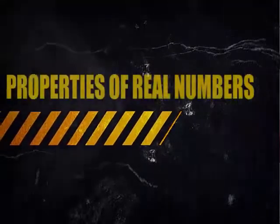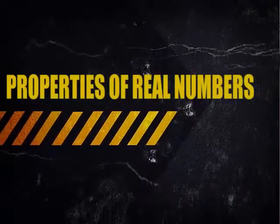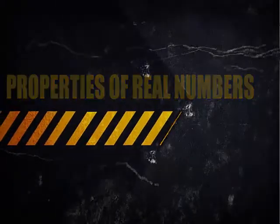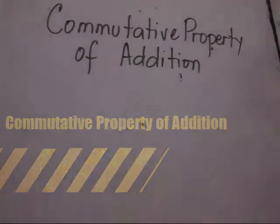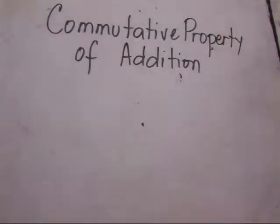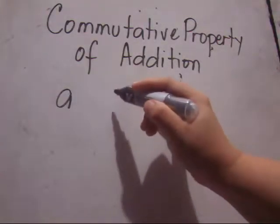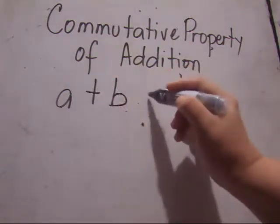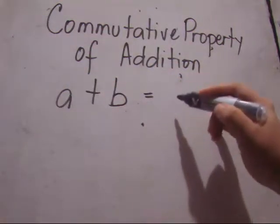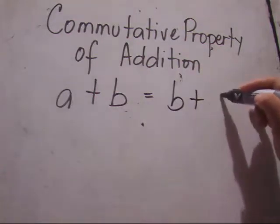Our next lesson will be properties of real numbers. Our first property is the commutative property of addition. It means that if A and B are added, it can also be equal to B plus A.